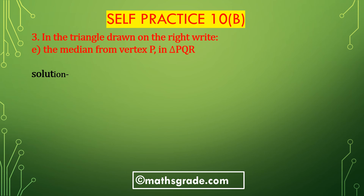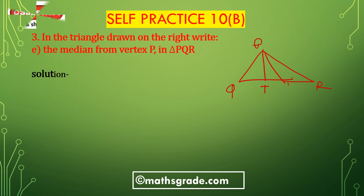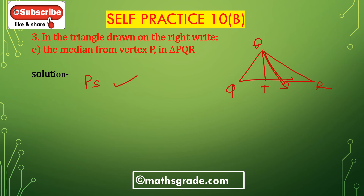Bit E: The median from the vertex P in triangle PQR. Drawing the given figure — this is triangle PQR with points T and S marked. The median from vertex P in triangle PQR is PS. So the median is PS, and PT is the altitude.